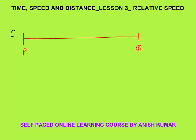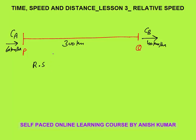Now, these two cars will meet after 3 hours. Let's look at a new scenario: Car A is moving at a speed of 60 km per hour from point P to Q, and Car B is moving in the same direction at 40 km per hour. Both are moving in the same direction. The gap between them is 300 km. What is the relative speed in this case? Using the single concept — increase or decrease in gap per unit time — this is my relative speed.